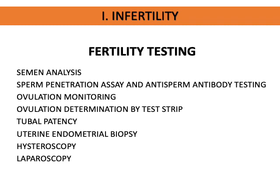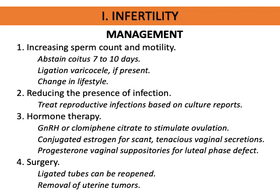Couples can still be offered options to continue trying to conceive, possibly through assisted reproductive techniques, adoption, or a child-free life. Ways to manage infertility include increasing sperm count and motility through abstinence for seven to ten days, and treating varicocele if present, which can impede sperm effectiveness. Lifestyle changes, most especially stopping vices, are also recommended.